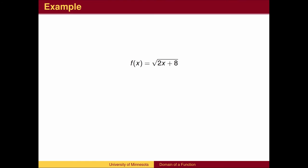Here is another example. We cannot take the square root of a negative number, so the quantity that we are taking the square root of, 2x plus 8, must be greater than or equal to zero. We then solve this inequality for x.